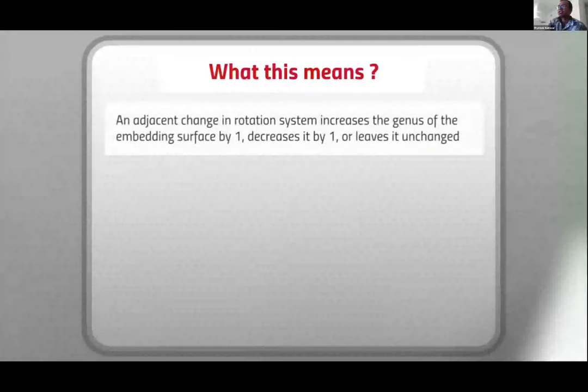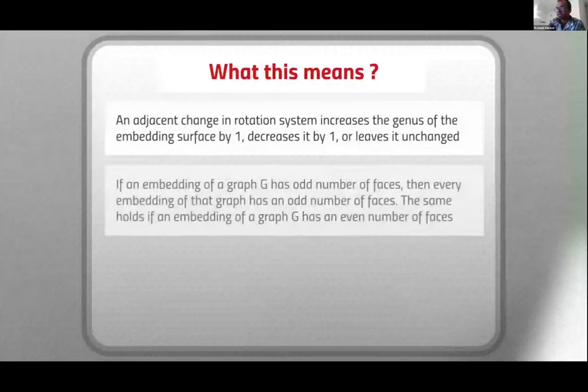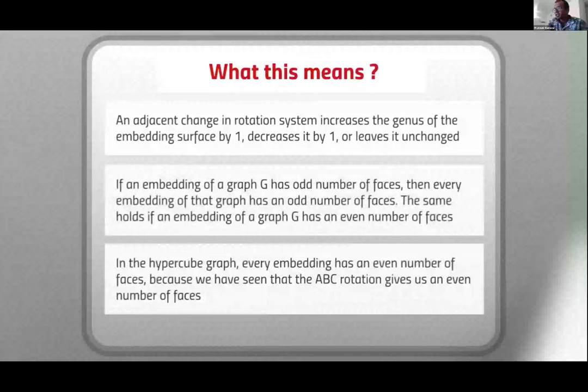Basically, we have control over how we can make the switches to make polygons. One example is here: before switching there are three different faces, and after switching they combine to form one single face. Similarly, we have control over breaking one face into three or having no change at all. A change in rotation system, one single change, increases the genus by one, decreases by one, or is unchanged. It also tells us that if one embedding has an odd number of faces, then all embeddings have odd, and if one has even, then all have even number of faces.